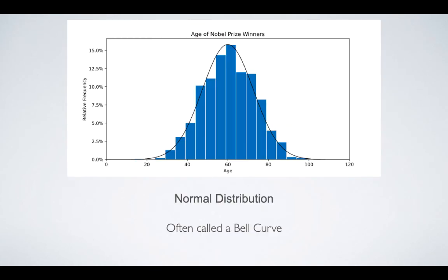Here we have a normal distribution. As you'll notice, it's pretty evenly spaced when you make the histogram, and we can make a nice curve through it. When you make this curve, it's often called a bell curve. What this shows is that the mean, median, and mode are very close to each other, and it tails off evenly in both directions.